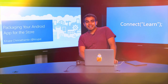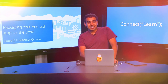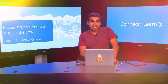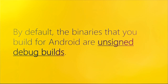Hi everybody. A natural destination for the apps you build is an app store. In this short video, I'm going to talk about how to take your Android app and package it up to deploy to the Google Play Store. By default, the binaries you build for Android are what are known as unsigned debug builds — unsigned in that the validity of who built them isn't verified, and debug in that there's metadata that optimizes for debugging.